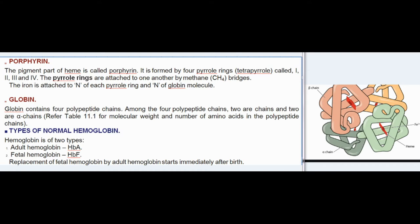Heme porphyrin: the pigment part of heme is called porphyrin. It is formed by four pyrrole rings (tetrapyrrole) called I, II, III, and IV. The pyrrole rings are attached to one another by methane (CH) bridges. The iron is attached to the nitrogen of each pyrrole ring and to the nitrogen of the globin molecule.